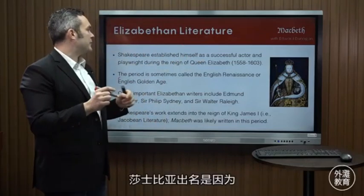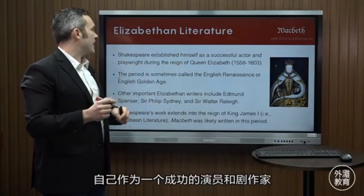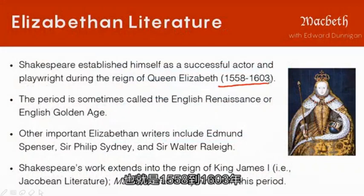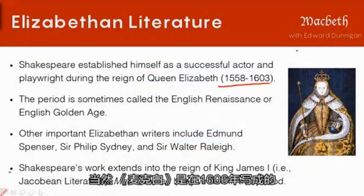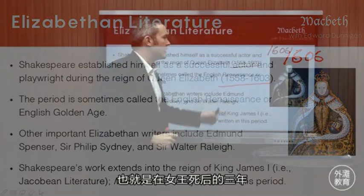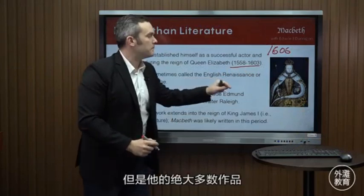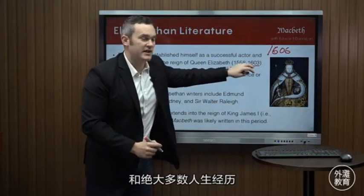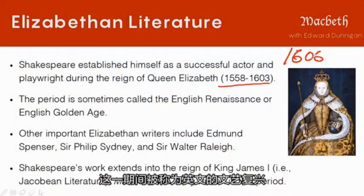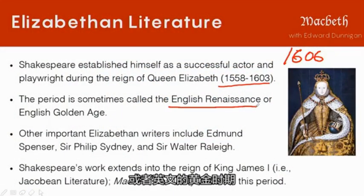Shakespeare established himself as a successful actor and playwright during the reign of Queen Elizabeth, from 1558 to 1603. Macbeth is written and staged in 1606, which is three years after the death of Elizabeth, but most of his plays and most of his experience happened during her reign. The period is sometimes called the English Renaissance or the English Golden Age.